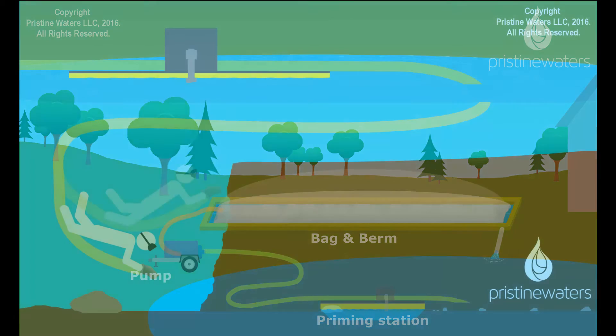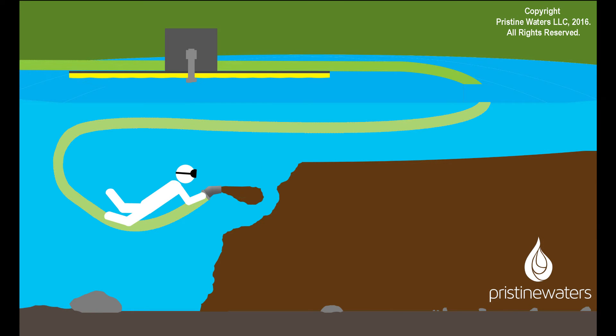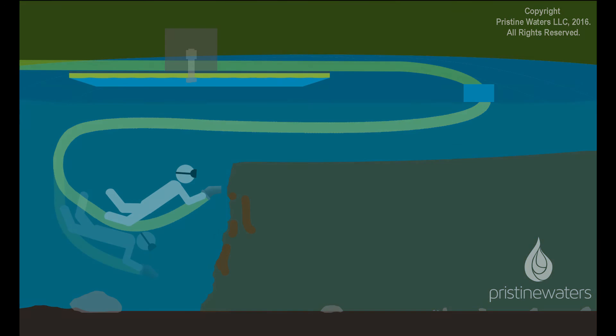This process is repeated until the project is completed. Please call Pristine Waters at 1-877-GOT-MUCK to discuss how our low-impact, eco-friendly suction dredging services can help you today.